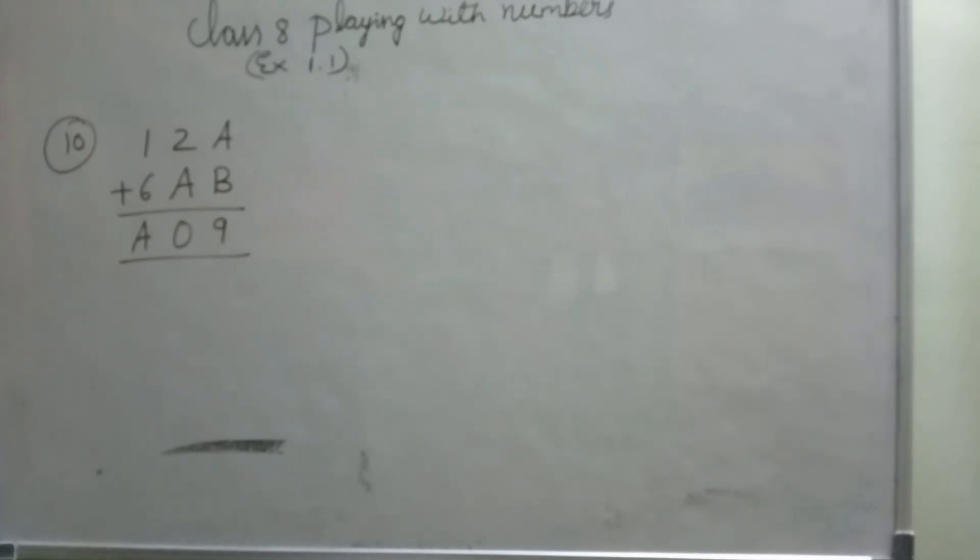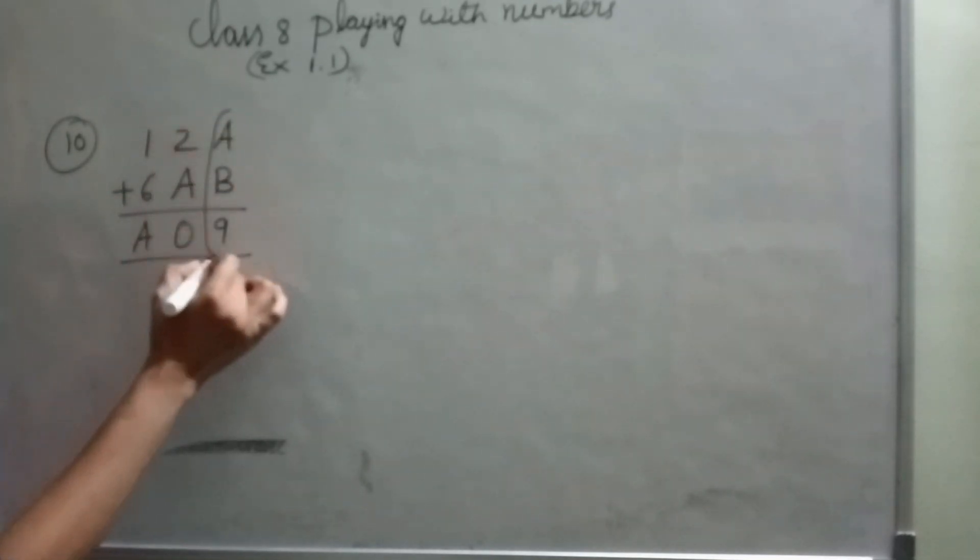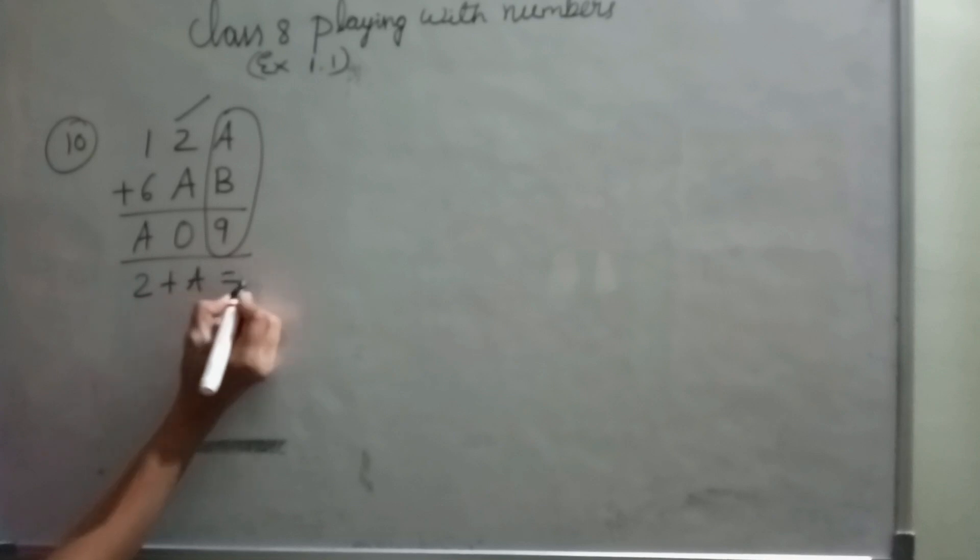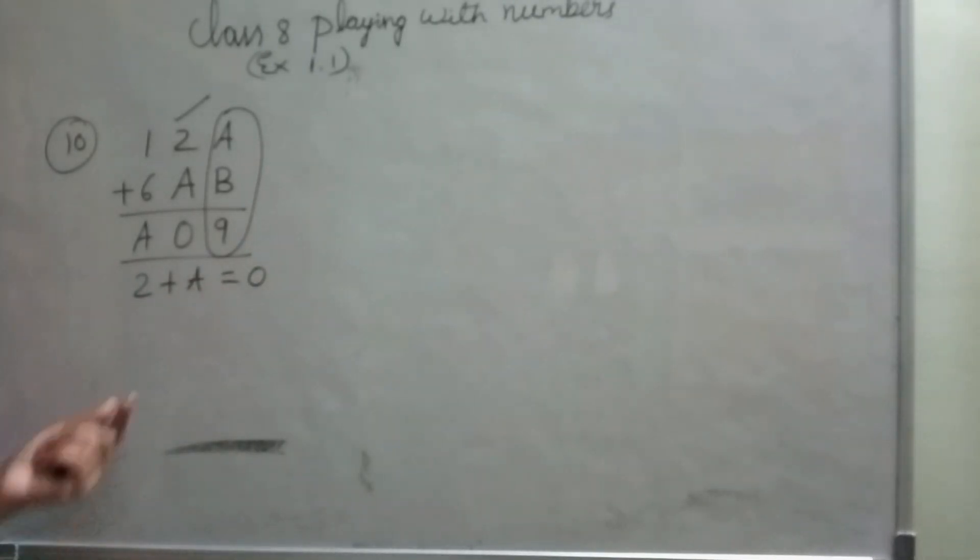Tenth problem. 12A plus 6AB equals A09. If I add 12A to 6AB, I will get A09 as answer. Here there are two unknowns, so very difficult to solve. Let's solve this one first. 2 plus A equals 0. Here if I add any number to 2, I won't get 0 as answer. So it may be 10.